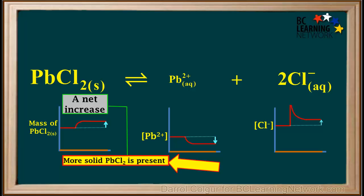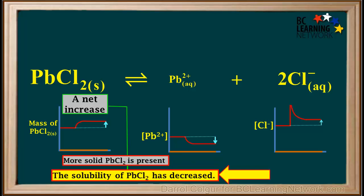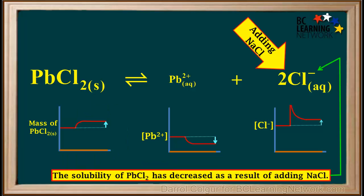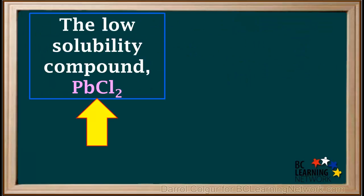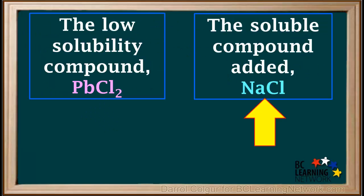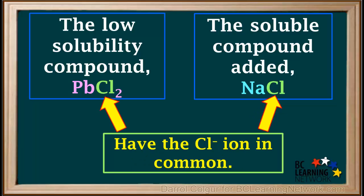An increase in its mass means more solid PbCl₂ is now present, which means that the solubility of PbCl₂ has been decreased. And remember, it was decreased as a result of adding NaCl to the solution. Notice that the soluble compound NaCl and the low solubility compound PbCl₂ both contain the chloride ion. We say that they have the chloride ion in common. Whenever a low solubility compound and a soluble salt added to it both contain the same ion, we say that they have an ion in common.